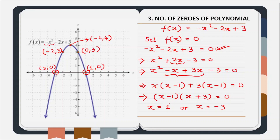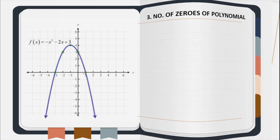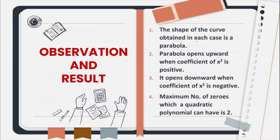So we have obtained two zeros: x equal to 1 and x equal to minus 3, and you can also see this on the graph. So what we have learned from this activity is that the shape of the curve obtained in each case is a parabola. This parabola opens upward when the coefficient of x square is positive, and it opens downward when the coefficient of x square is negative. The maximum number of zeros which a quadratic polynomial can have is 2.